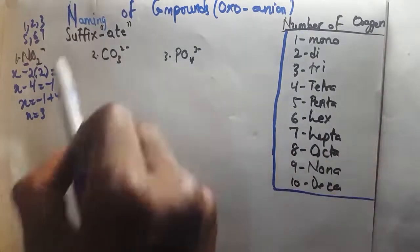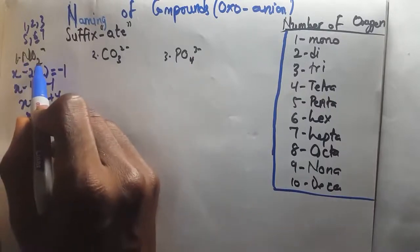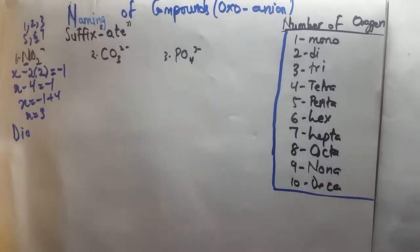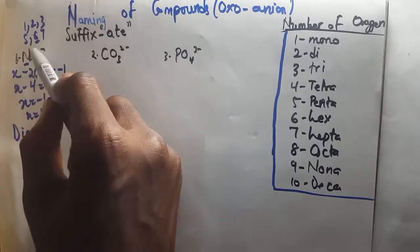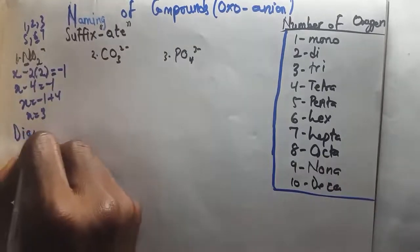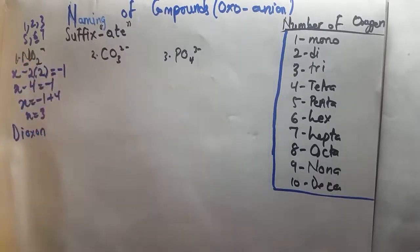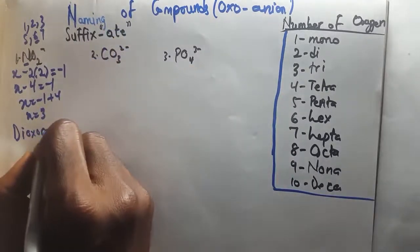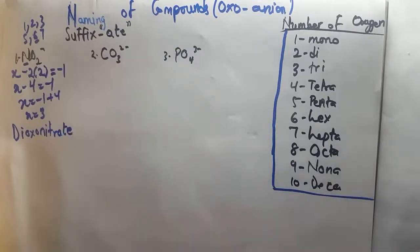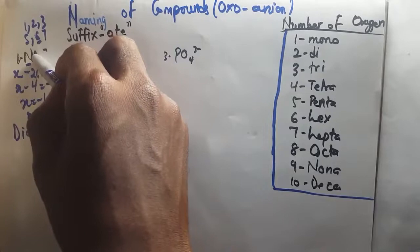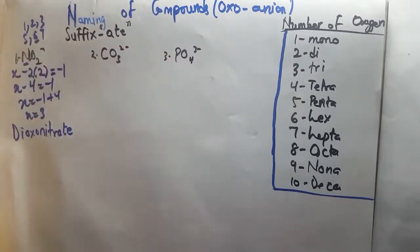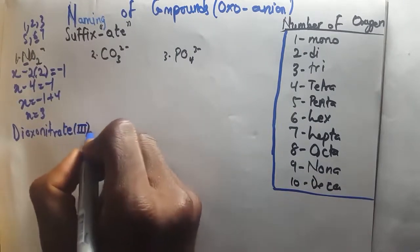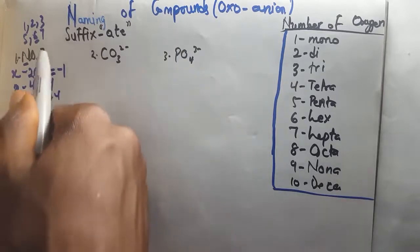To name, you look at the number of oxygen atoms you have — you have 2, so we call it di. You name from right to left. Di — because of the 2. Oxo — because of the oxygen. Then N, nitrogen — that is where the suffix -ate comes in, so it's nitrate. The full name is dioxonitrate(III) ion. It is an ion because it has a negative charge.